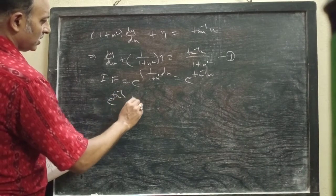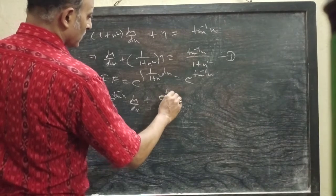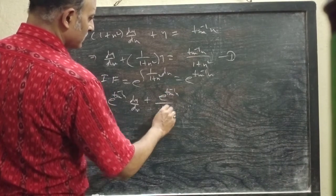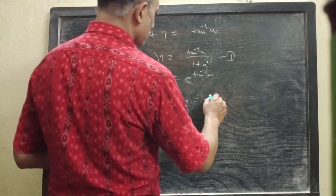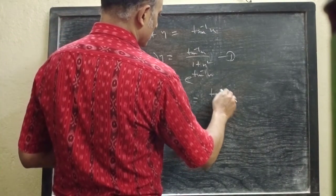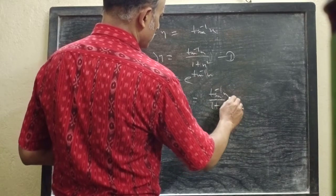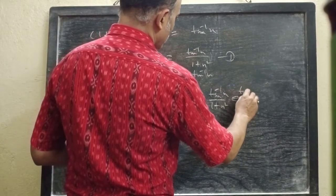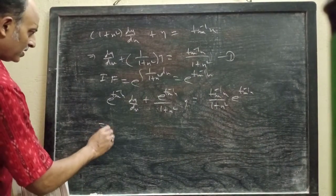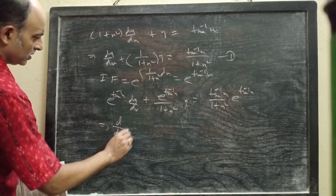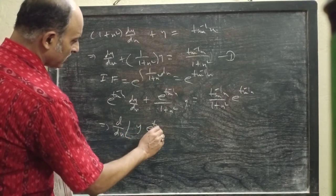The next problem: dy/dx + e^(tan⁻¹x) / (1 + x²) × y = tan⁻¹x / (1 + x²) × e^(tan⁻¹x). The left side can be written as d/dx of [y × integrating factor].